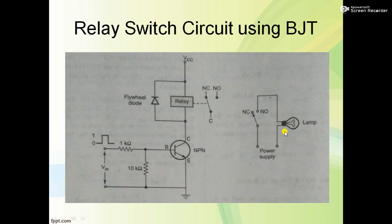See here in this simple lamp circuit. During the transistor on state, the relay switch position changes from normally closed to normally open. When the relay switch is normally open, the lamp turns on.